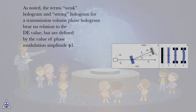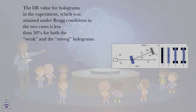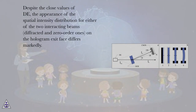As noted, the terms weak hologram and strong hologram for a transmission volume phase hologram bear no relation to the diffraction efficiency value, but are defined by the value of phase modulation amplitude φ₁. The diffraction efficiency for holograms in the experiment, attained under Bragg conditions in both cases, is less than 50% for both the weak and the strong holograms. Despite the close values of diffraction efficiency, the spatial intensity distribution for either of the two interacting beams — diffracted and zero-order — on the hologram exit face differs markedly.